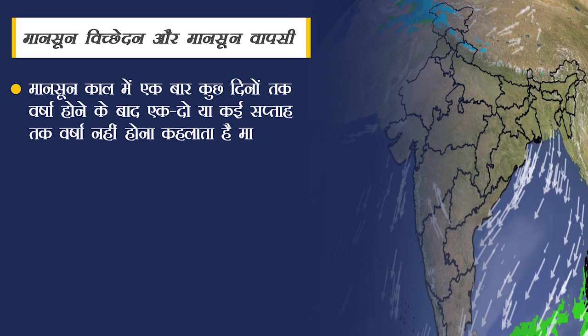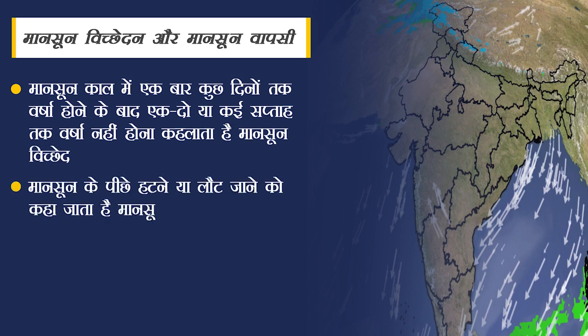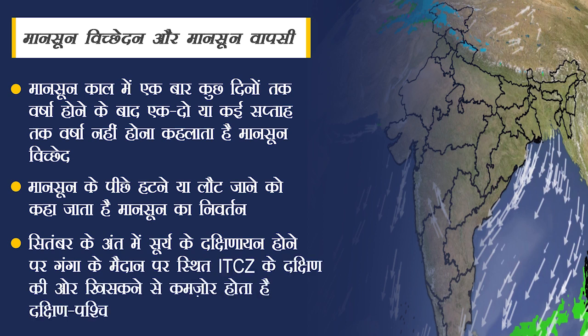अब मानसून विच्छेदन और मानसून की वापसी की प्रक्रिया को समझते हैं। दक्षिण मानसून काल में एक बार कुछ दिनों तक वर्षा होने के बाद अगर एक, दो या कई सप्ताह तक वर्षा न हो तो इसे मानसून विच्छेदन कहा जाता है। उत्तरी भारत के विशाल मैदान में यह विच्छेदन उष्णकटिबंधीय चक्रवातों की संख्या कम हो जाने और ITCZ की स्थिति में बदलाव से होता है। पश्चिमी तट पर विच्छेद तब होता है जब आर्द्र पवनें तट के समांतर बहने लगें। राजस्थान में विच्छेद तब होता है जब वायुमंडल के निम्न स्तरों पर तापमान की विलोमता नम हवाओं को ऊपर उठने से रोक देती है।